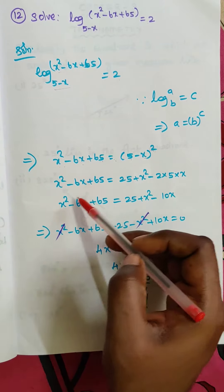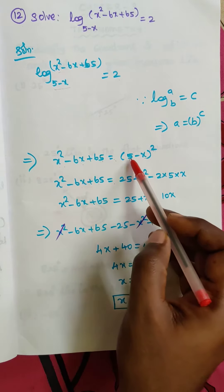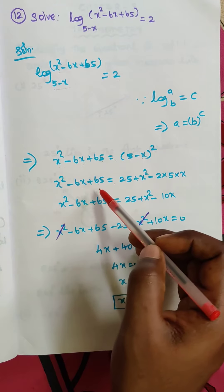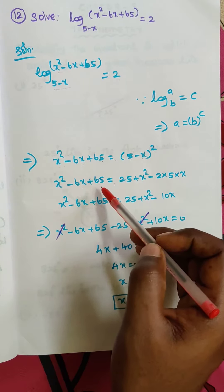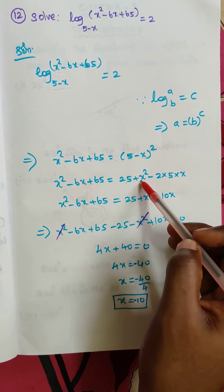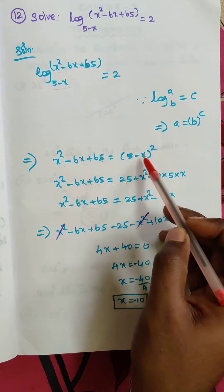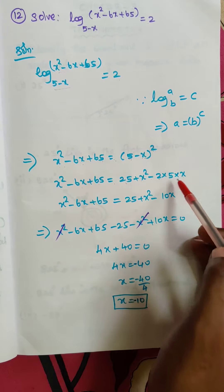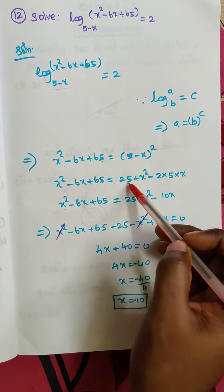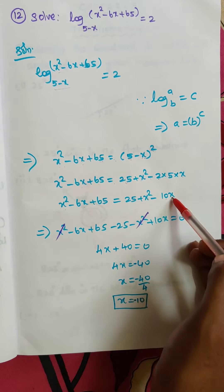So x² - 6x + 65 is equal to (5 - x)². Now (5 - x)² is in the form of (a - b)², which equals a² + b² - 2ab. So that gives us 5² + x² - 2×5×x, which is 25 + x² - 10x.